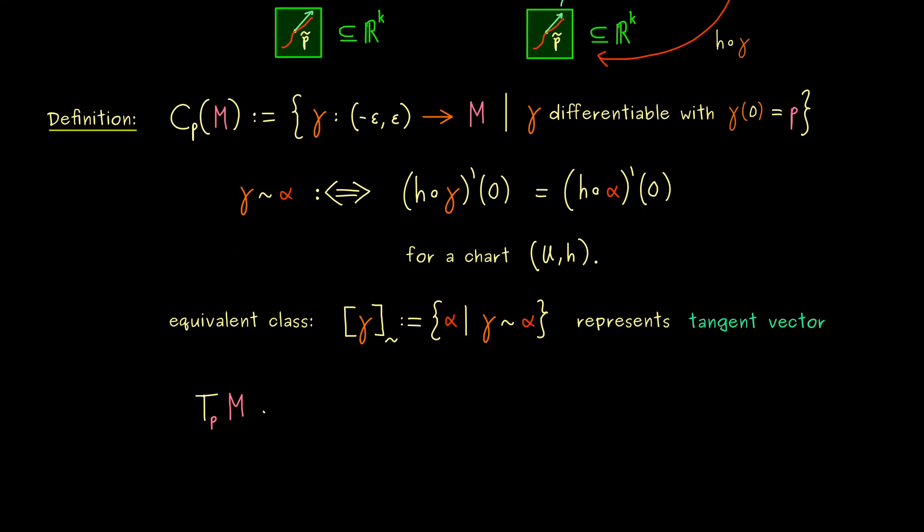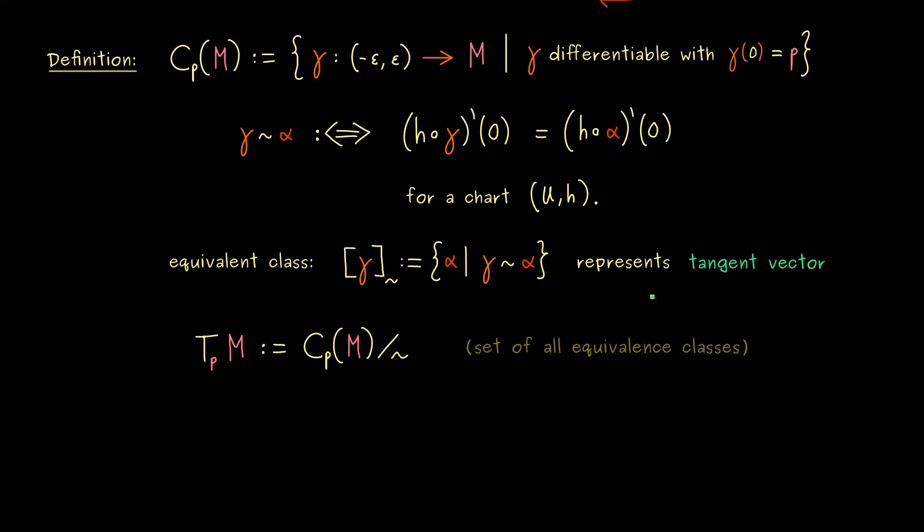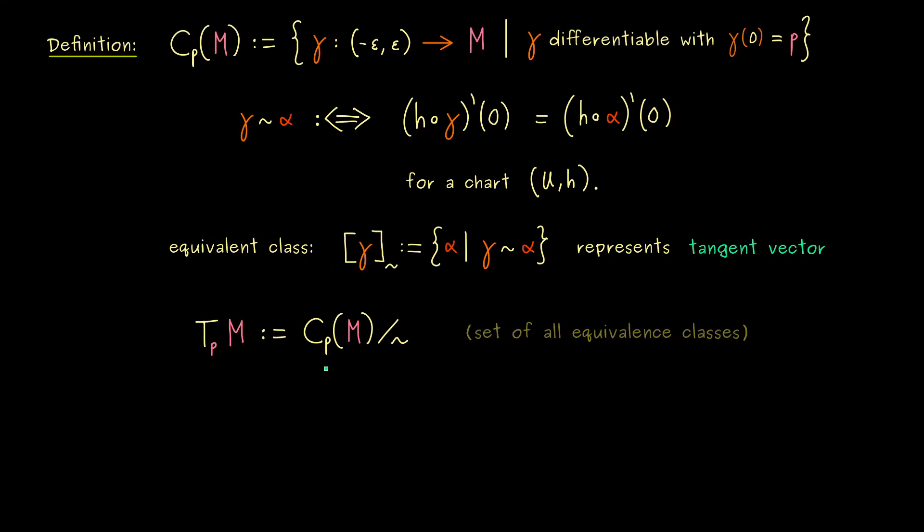And as mentioned before, the name is simply T_p M. And you might already guess, it is simply the set of all equivalence classes. And the set of all equivalence classes is usually denoted by this modulo operator. So not complicated at all. First we define all the boxes that represent tangent vectors. And then we simply calculate with these boxes. And there we have it. This is the famous tangent space for the manifold M.